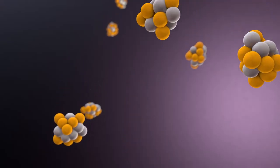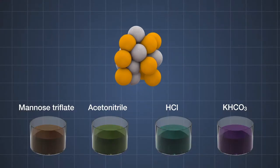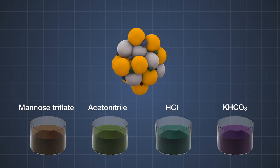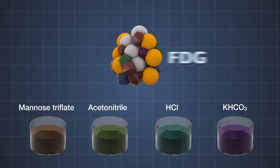When you refined the fluorine 18 and reacted with solutions such as mannose triflate, acid, acetonitrile, hydrochloric acid, and potassium hydrogen carbonate in a reactor, FDG comes out.